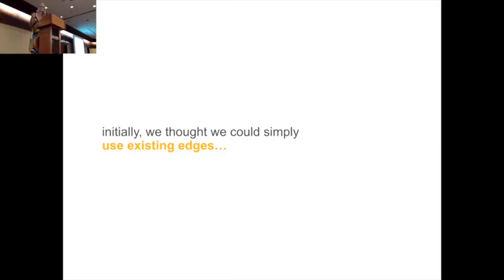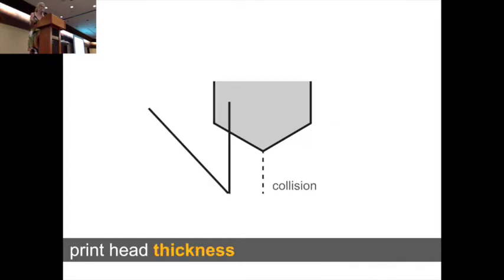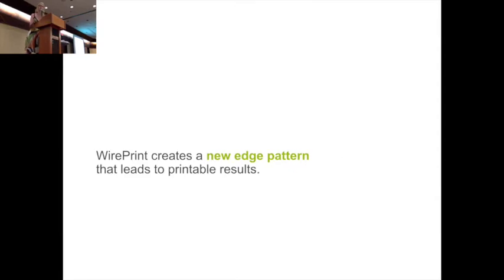Initially we actually thought maybe we can just use the existing edges of a 3D model, but the print head actually causes certain limitations. For instance, very steep edges cannot be printed as you can see here because the print head will collide with already existing printed material. Also, two vertical edges also need to be spaced out at least one print head diameter because otherwise you also get a collision. Therefore, WirePrint creates actually a new edge pattern which leads to printable results.